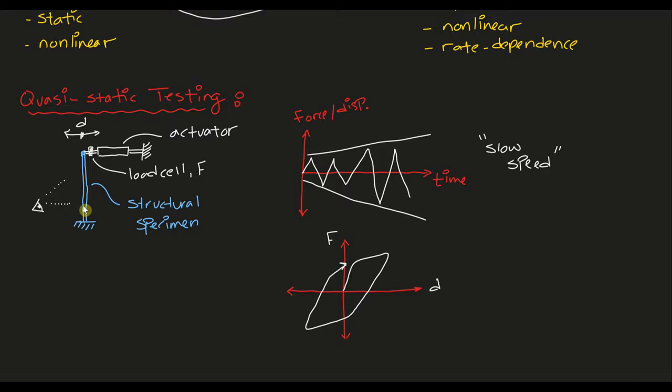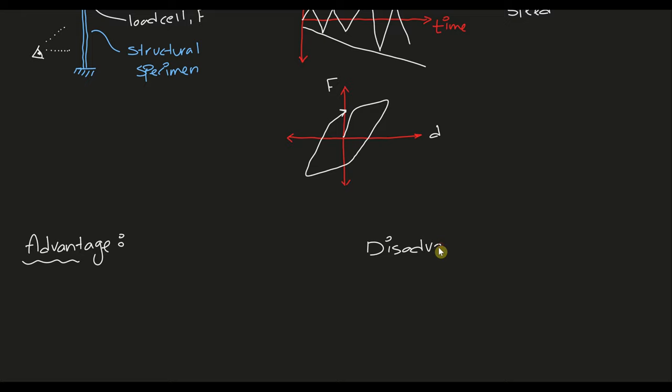As you may expect, this method has its advantages and disadvantages, with the advantages being that it's easy to do and it allows observations and we can pause experiments in real time, while the disadvantages are that rate dependence and any kind of dynamic behavior that are expected from the material are ignored.